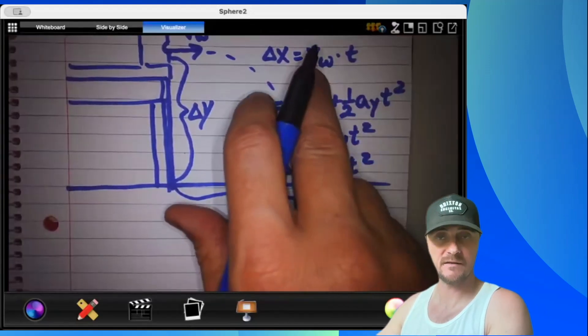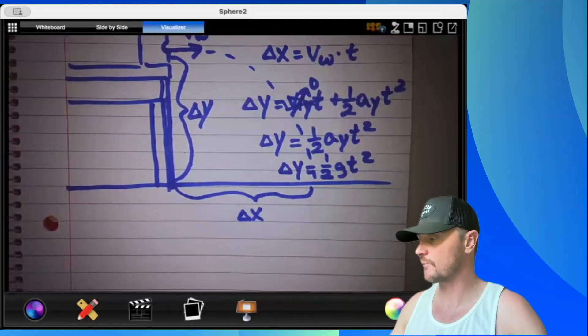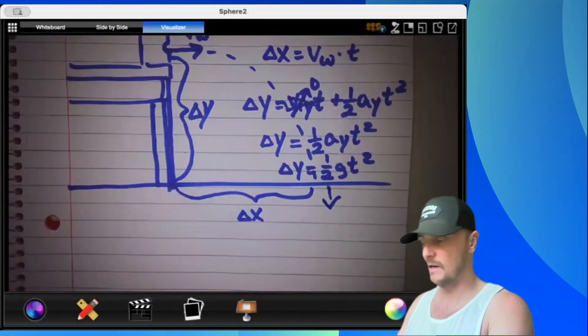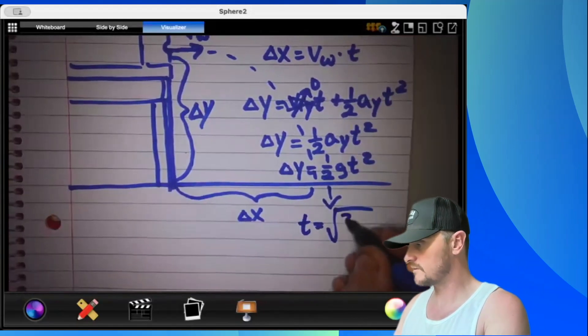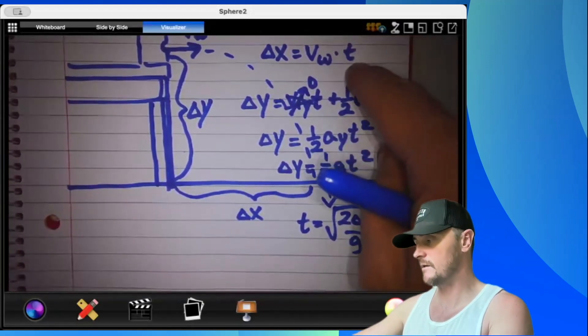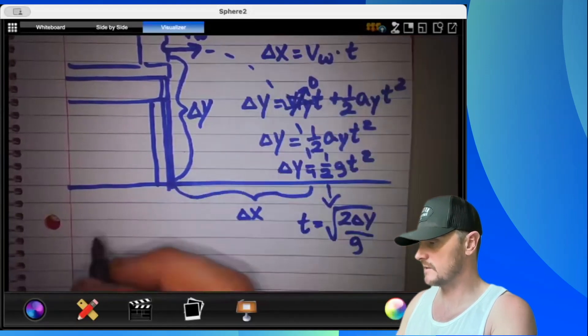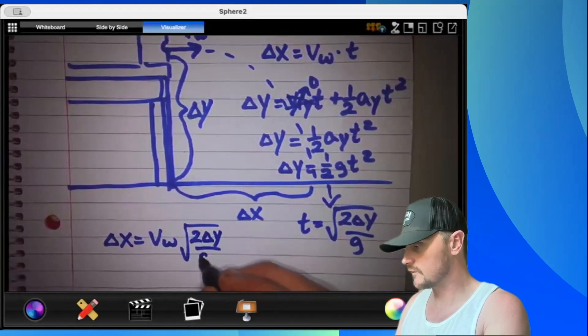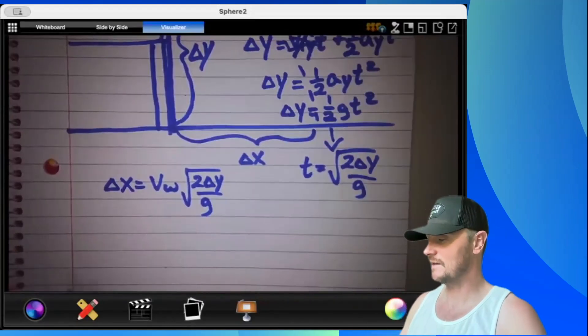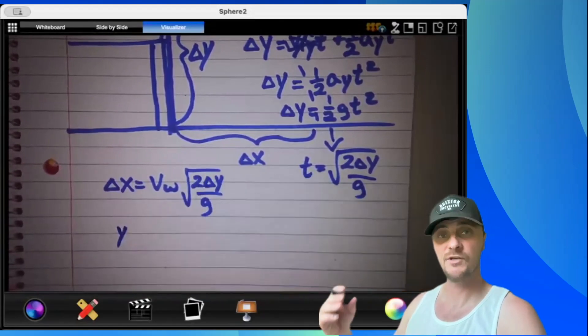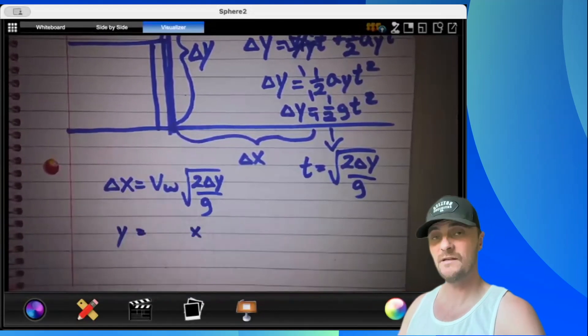At this point, I'm going to take this equation and this equation and bring them together through time. Time is the quantity that both the X and the Y axis share. T equals the square root of 2 delta Y divided by G. I'll take this time expression and plug it in for that T. Delta X equals V water times square root of 2 delta Y over G. We can see that delta X, if placed on my Y axis, and square root of 2 delta Y over G, if placed on my X axis, would yield a slope that is equal to the velocity of the water.